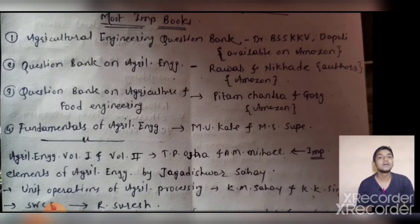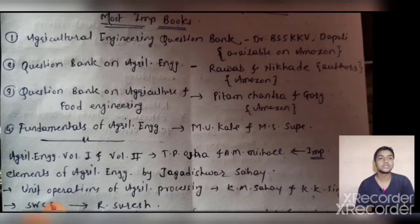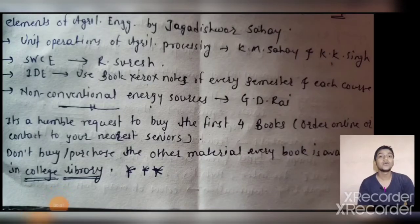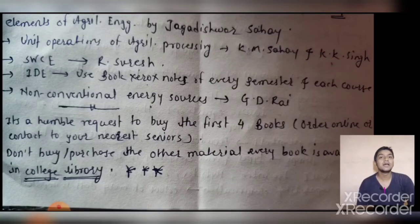For farm machinery and power, you can refer to 'Elements of Agriculture Engineering' by Jagdishwar Sahai. For agriculture processing, you can refer to 'Unit Operations of Agriculture Processing' by K.M. Singh and K.K. Singh. For soil and water conservation engineering, you can refer to R. Suresh. For irrigation and drainage engineering, you can use your regular notes or refer to M. Michael.